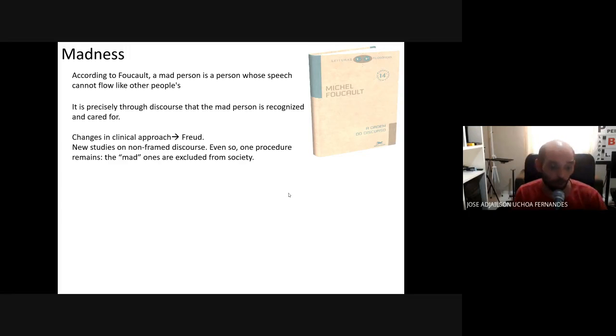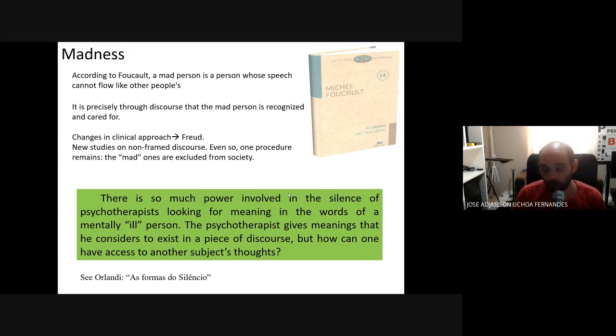But even so, there is one procedure that remains: the mad person is to be excluded from society. He should go to a kind of therapy or to the clinic, or to be isolated. That's why there is much power involved in the silence of psychotherapists looking for meaning in the words of a mentally ill person.